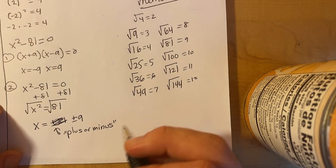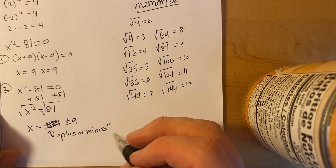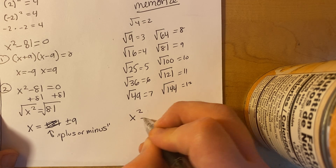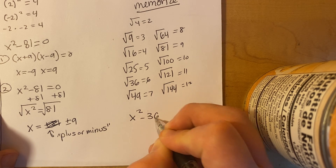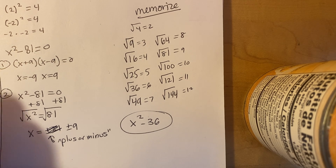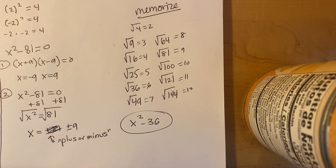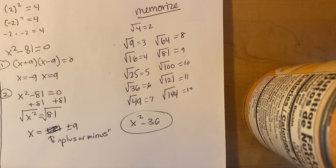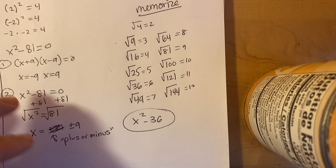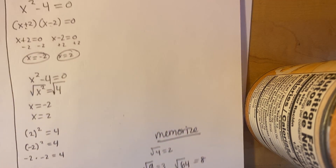On your notes, the next problem you're going to do both ways is x squared minus 36 equals 0. Do that on your paper. Try to pause the video and do this on your own. Hopefully you've done this on your own and come back to the video, and now we're going to do some example problems.